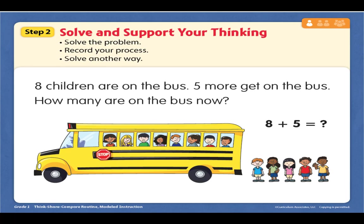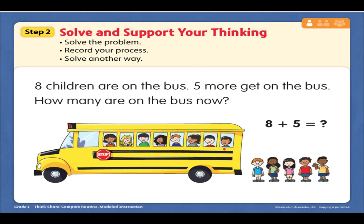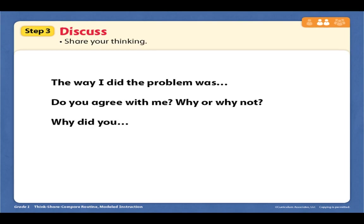So let's take a look at how many children are on the bus. First we started with eight. I have eight children on the bus — one, two, three, four, five, six, seven, eight. Those are my eight children. Then five more get on the bus. I'm going to start with my first number eight and count on: eight, nine, ten, eleven, twelve, thirteen. Eight plus five is thirteen. The way I solved the problem is I counted on. You might have done it a different way, but that is how I solved the problem.